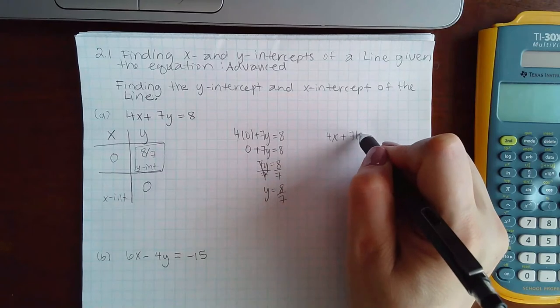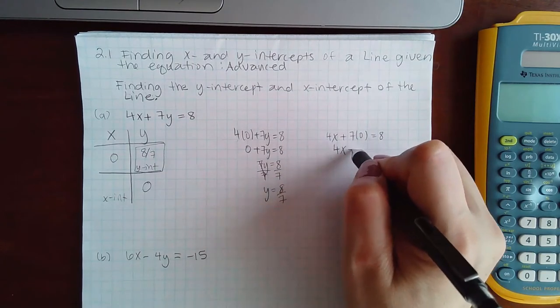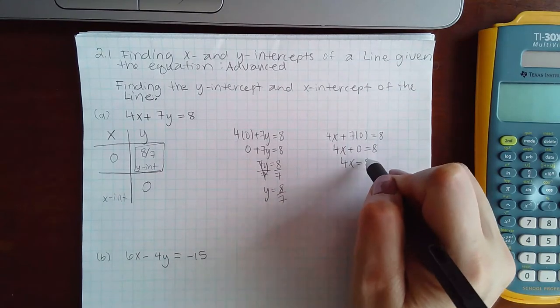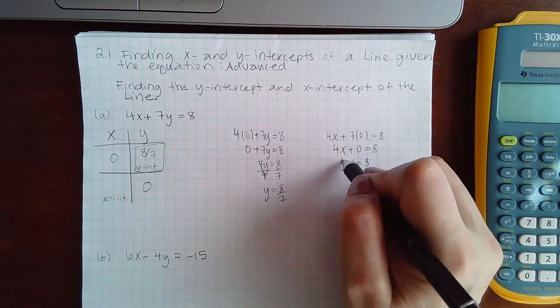Then I'm going to plug in zero for y, so I get four x plus zero equals eight, or just four x equals eight. Divide by four, that is actually just two.